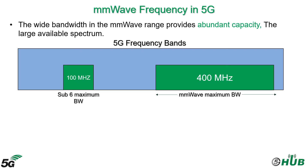The wide bandwidth in the millimeter wave range provides abundant capacity due to the large available spectrum. This bandwidth offers the potential of orders of magnitude higher transmission speeds than when operating in the congested bands below 6 GHz.